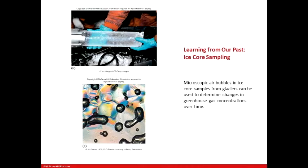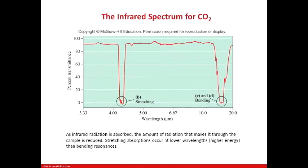They take these ice core samples and analyze them using infrared spectroscopy. If it's CO2, the infrared spectrum will look a certain way — this is a thumbprint of infrared showing how it absorbs and transmits. We have the infrared spectrum for CO2 here, and we have it for water.